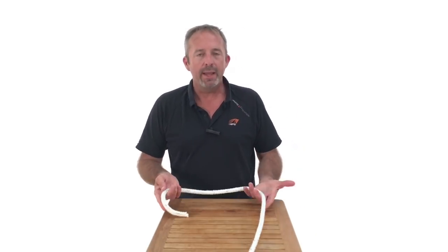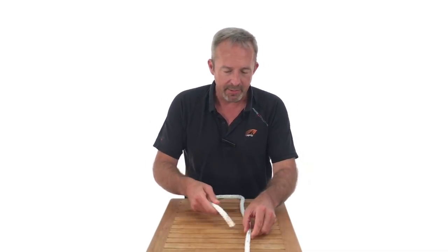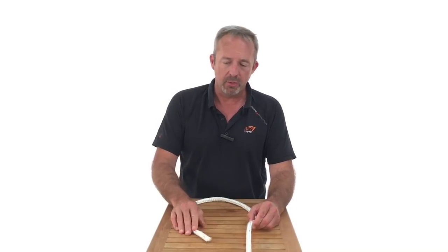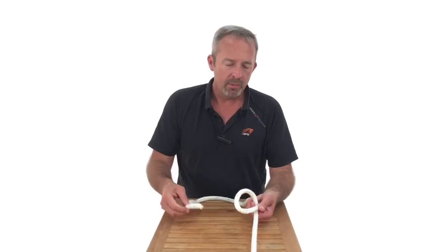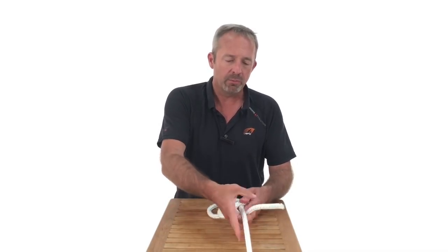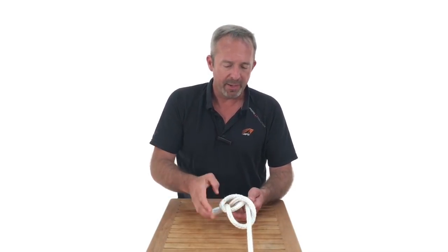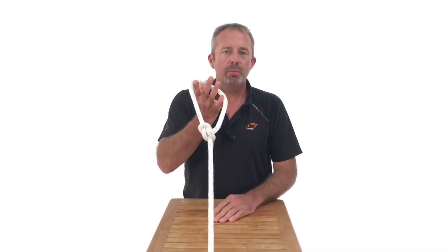So what's the classic way to do a bowline? Everybody, I think, has probably heard of the rabbit analogy. So I've got the line. I'm going to have to let go of this, and with two hands, I create the hole. Rabbit comes out of the hole, goes around the tree, gets scared, goes back in the hole, pull it tight. Pretty foolproof.